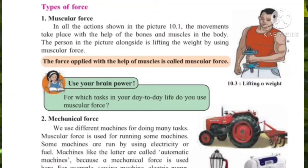A man is lifting a weight. To lift that weight, he uses his muscles. The movements which take place with the help of bones and muscles in the body — that type of force is called muscular force. So the force applied with the help of muscles is called muscular force. Understood, everyone?